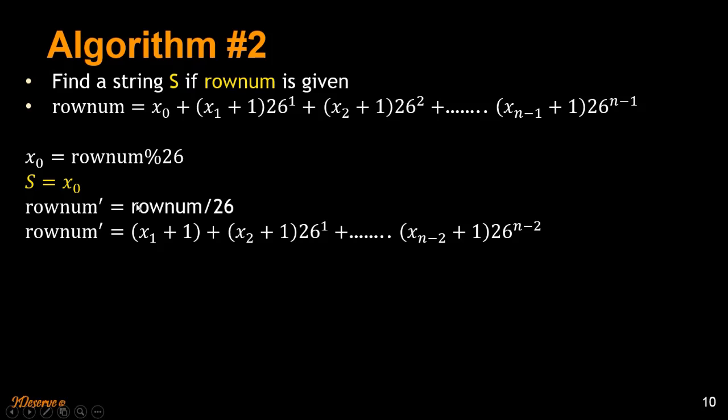So what remains is x1 plus 1 plus x2 plus 1, 26 power 1 and so on. So we want x1. We have x0 now. We want x1.